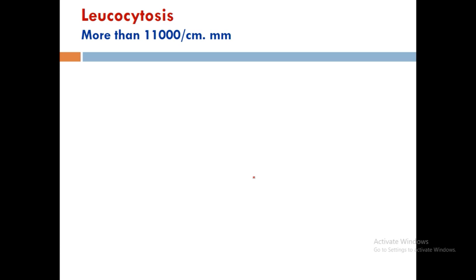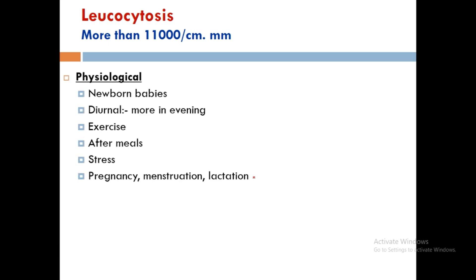The normal WBC count is 4,000 to 11,000 per cubic mm. When the count exceeds 11,000 the condition is leukocytosis; when below 4,000 it is leukopenia. Physiological causes of leukocytosis include: newborn babies, higher counts in the evening, exercise, after meals, stress, pregnancy, menstruation, and lactation.